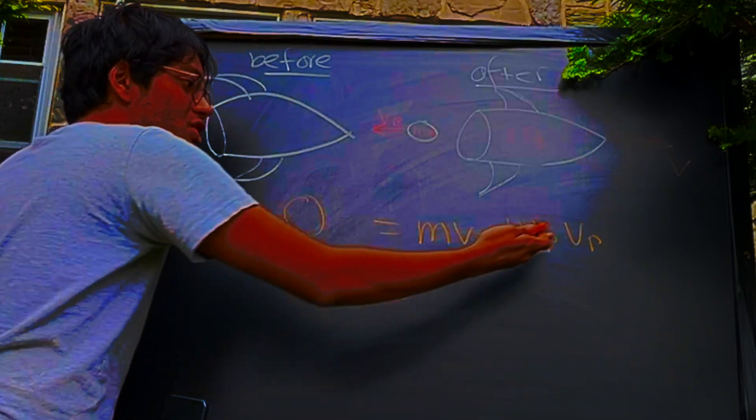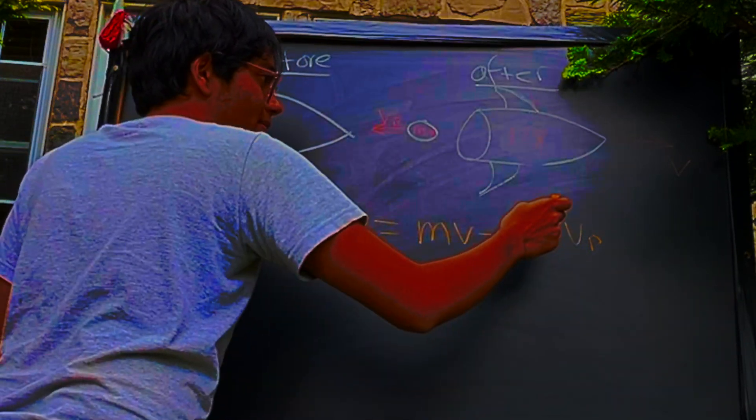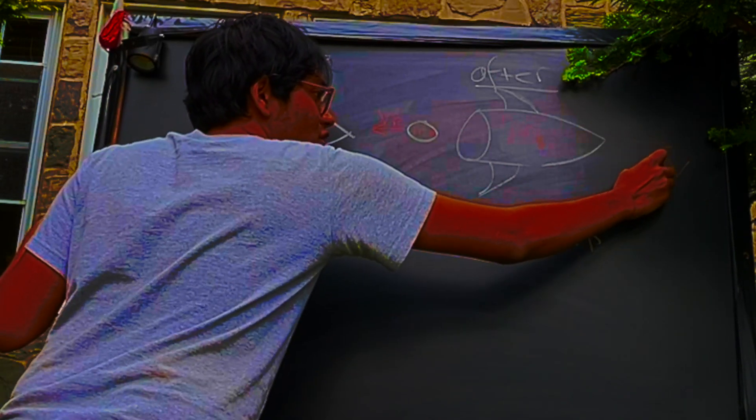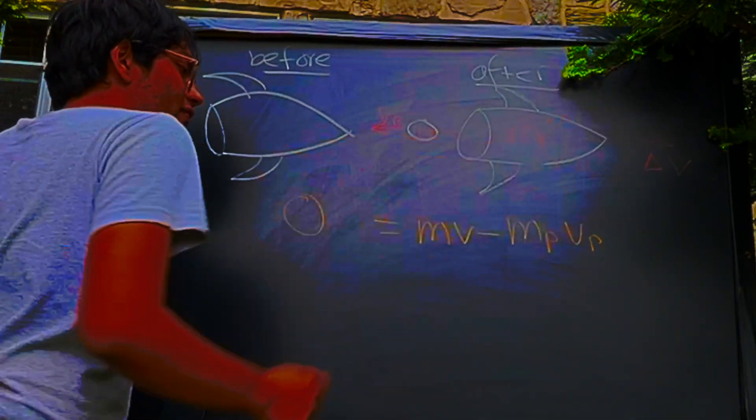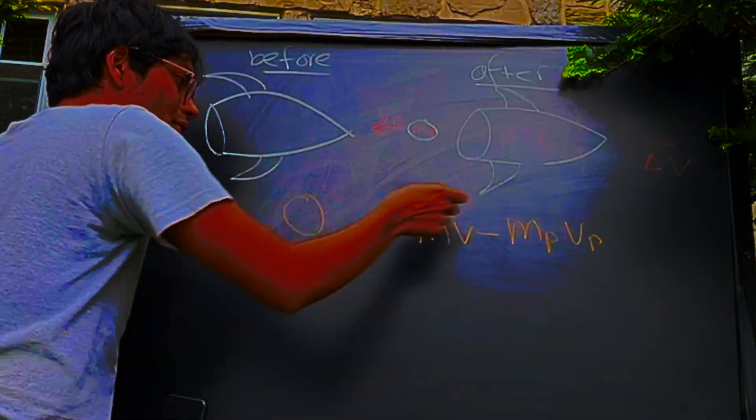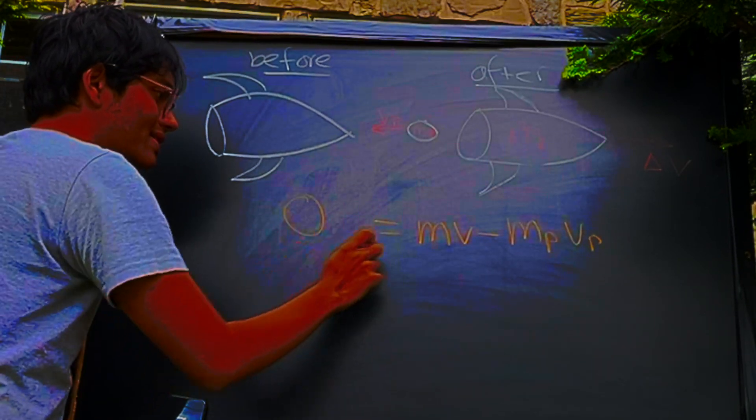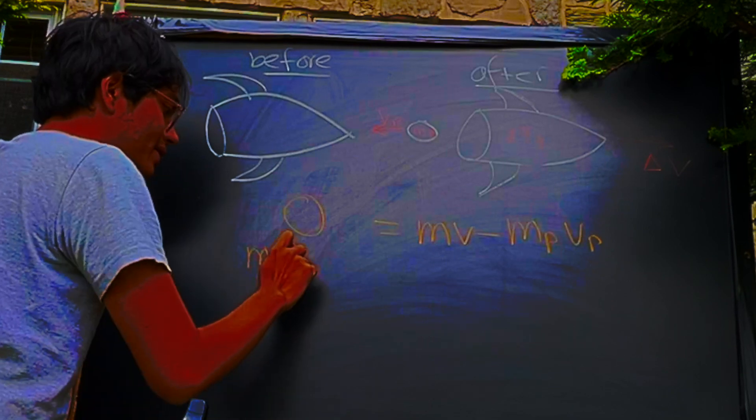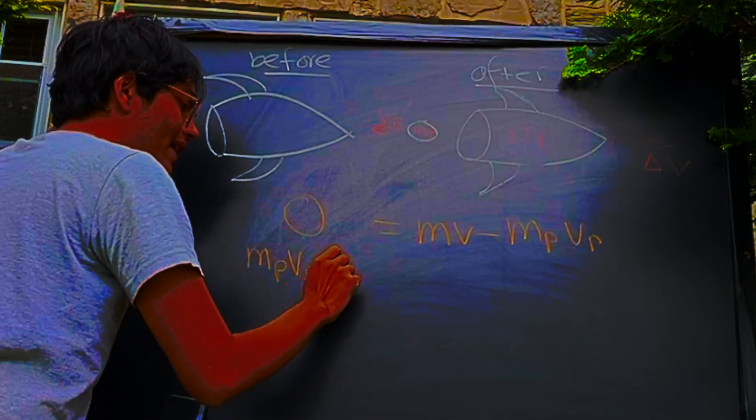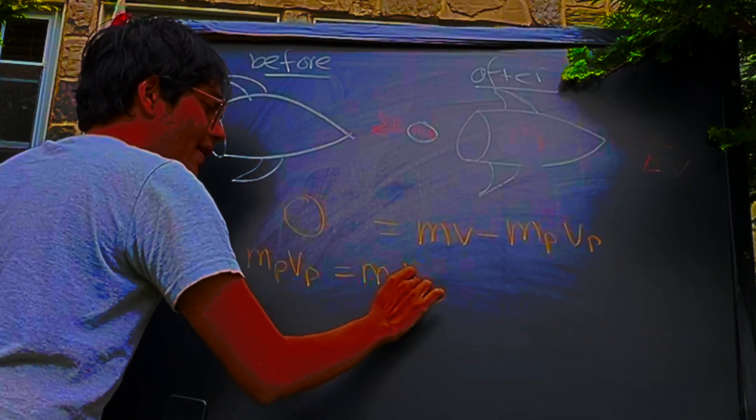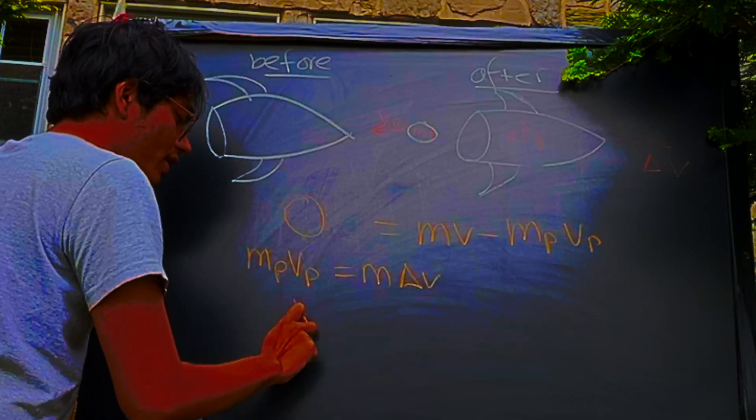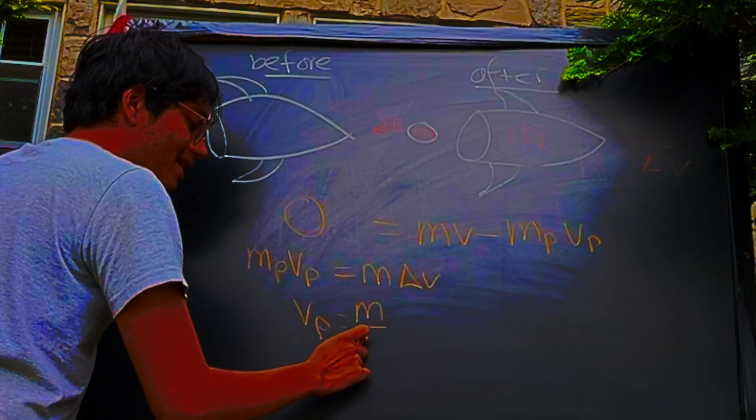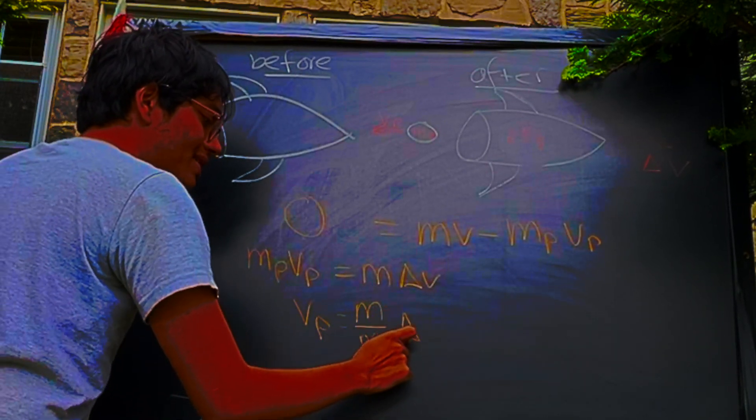And so now, of course, we can solve for what this velocity might be. If I go ahead and designate the rocket's velocity to be change in velocity, like delta v over there, well, what can we do? We can rewrite this as such. We can say, move this term over to the other side, so that the mass of the propellant times the velocity of the propellant equals the mass of the rocket times delta v. And so we can solve for the velocity of the propellant, and that's going to be the ratio of the rocket's mass to the propellant's mass times delta v.